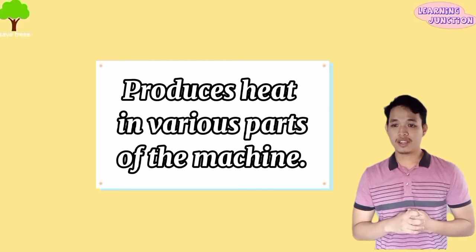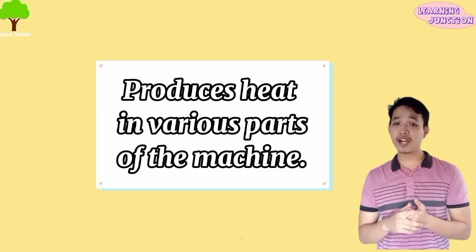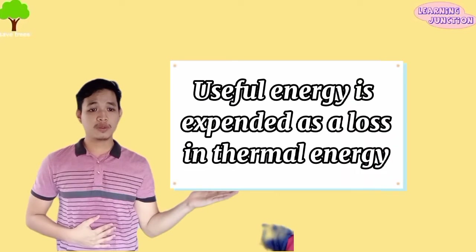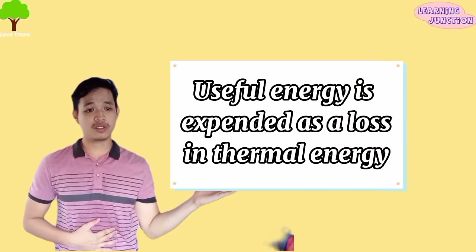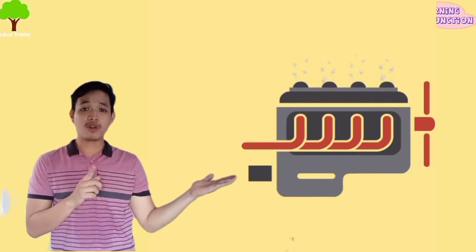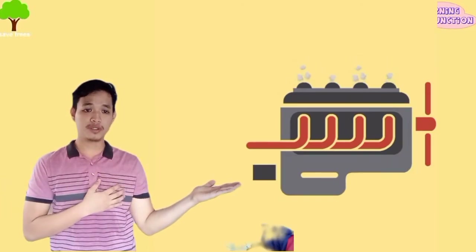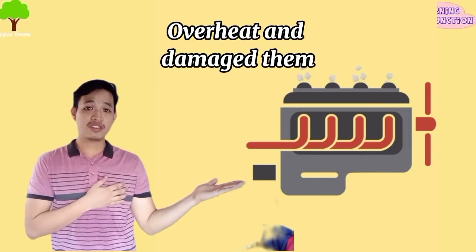The main disadvantage of friction is that it produces heat in various parts of a machine. In this way, useful energy is expended as a loss in thermal energy. For example, a car engine becomes warmer due to friction, and this could overheat and damage it.